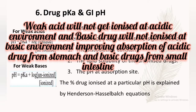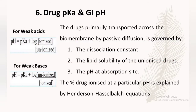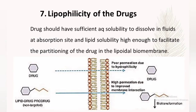As you already know, acidic drugs are readily absorbed from the stomach because they are in unionized form in the acidic gastric environment, whereas weak bases are absorbed from the basic environment of the small intestine.